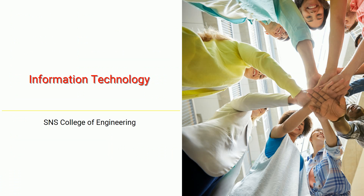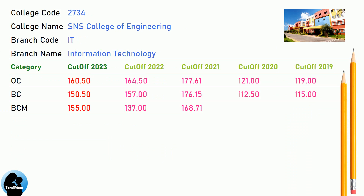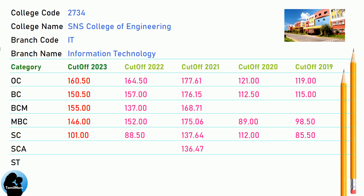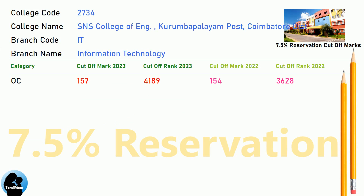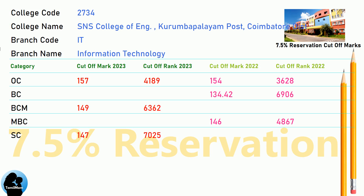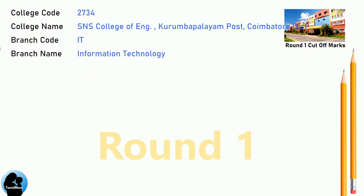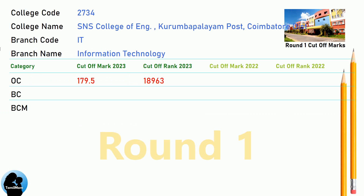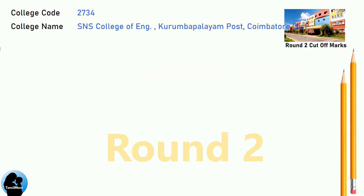DNA Cut-off for ASNS College of Engineering in Information Technology. DNA 7.5 Reservation Cut-off for ASNS College of Engineering in Information Technology. DNA Round 1 Cut-off for ASNS College of Engineering in Information Technology. DNA Round 2 Cut-off for ASNS College of Engineering in Information Technology.